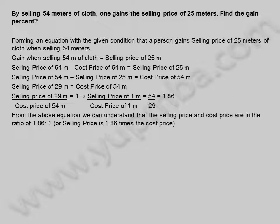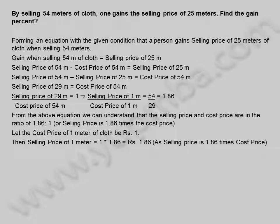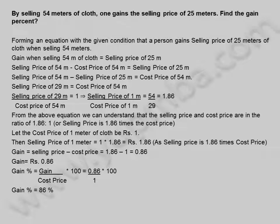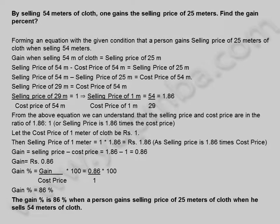Selling price is 1.86 times the cost price. Let the cost price of 1 meter of cloth be 1 rupee. Then selling price of 1 meter is equal to 1 × 1.86 = 1.86 rupees. Gain is equal to selling price minus cost price = 1.86 minus 1 = 0.86 rupees. Gain percentage is equal to gain by cost price into 100 = 0.86 by 1 into 100. Gain percentage is 86%.